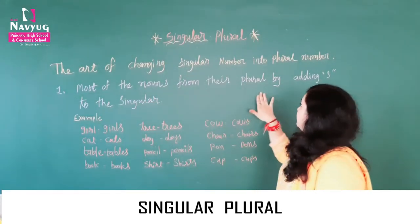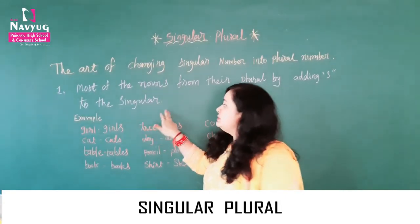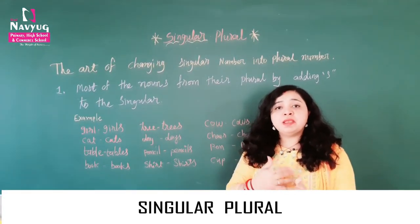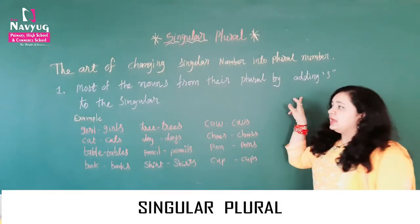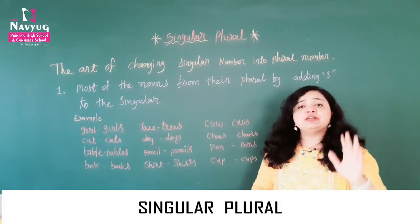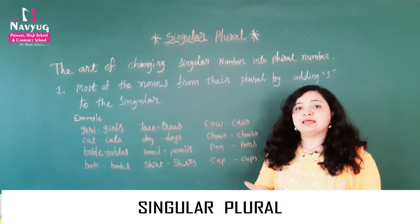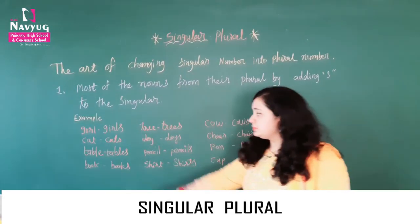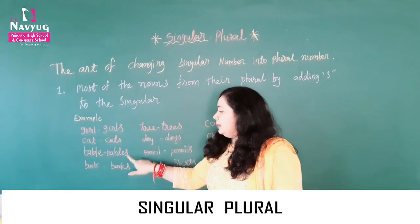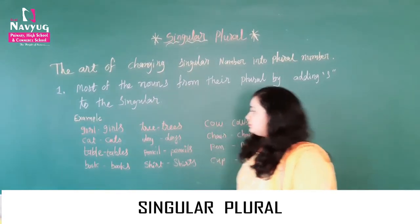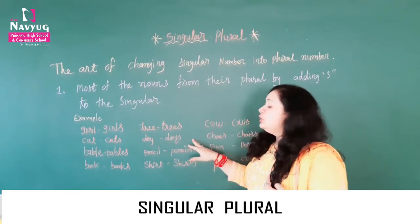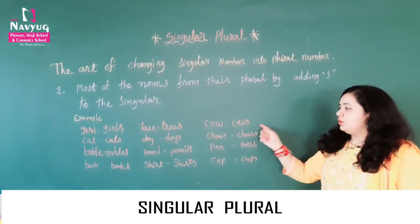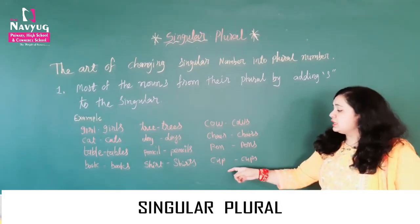First, most of the nouns form their plural by adding S to the singular. Examples: girl — girls, cat — cats, table — tables, book — books, tree — trees, dog — dogs, pencil — pencils, short — shorts, cow — cows, chair — chairs, pen — pens, cup — cups.